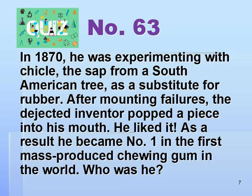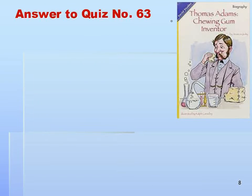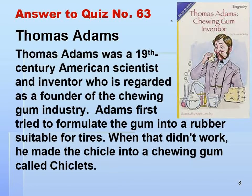Number 63. In 1870, he was experimenting with chicle, the sap from a South American tree, as a substitute for rubber. After mounting failures, the dejected inventor popped a piece into his mouth. He liked it. As a result, he became number one — the first mass producer of chewing gum in the world. Who was he? Answer: Thomas Adams.